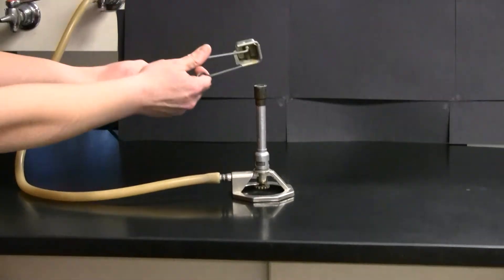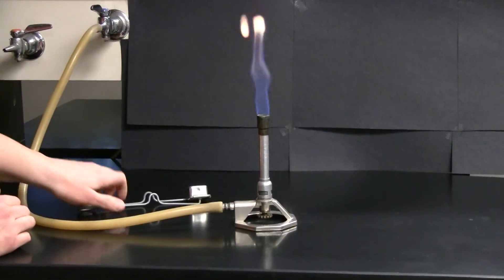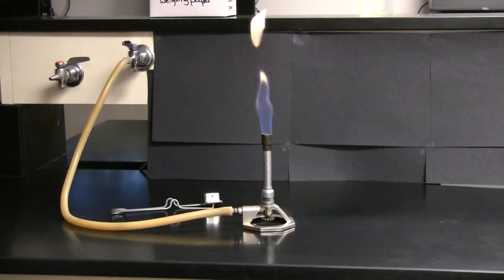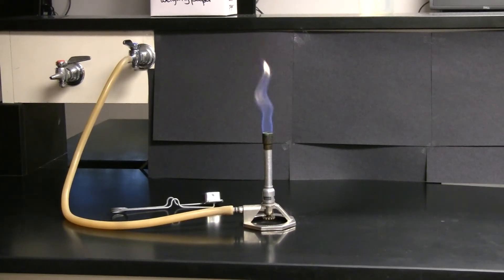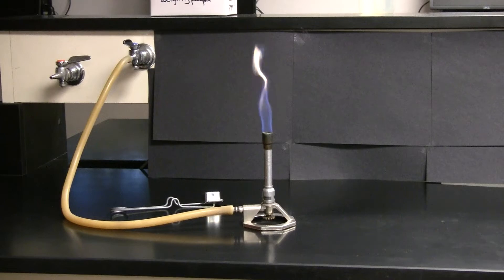Pick up the striker and light the Bunsen burner. You've now lit the Bunsen burner, but this is a very poor Bunsen burner flame. We need to adjust this flame so that we have a good strong flame that will not blow out if people are walking by.